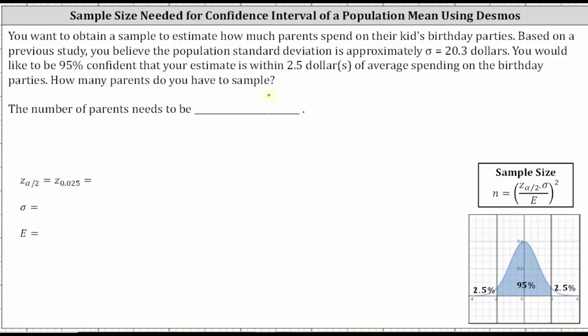Let's first list the given information. We know the population standard deviation is $20.3 and therefore sigma is 20.3. You want to be 95% confident the estimate is within $2.5 of average spending and therefore E is 2.5.